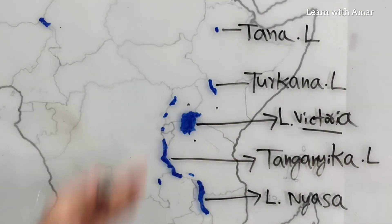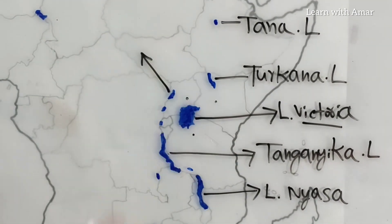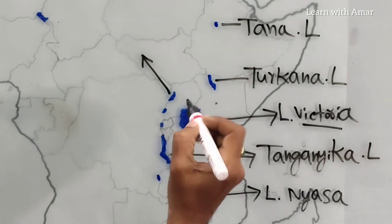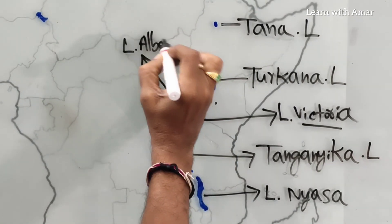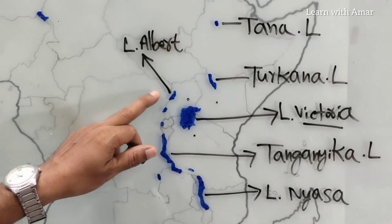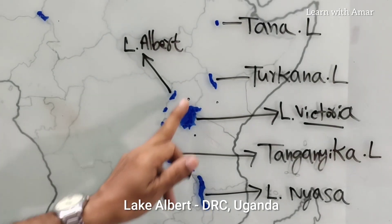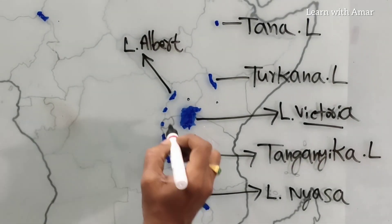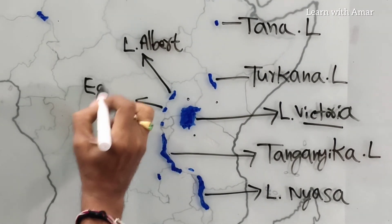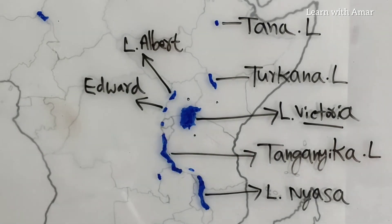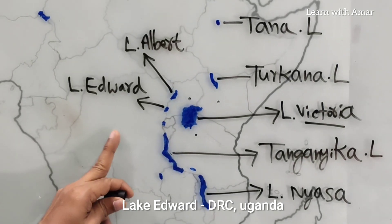These small lakes are there. This one is named after a person — a prince of some country. It is known as Lake Albert. Lake Albert is located between two countries: DRC, the Democratic Republic of Congo, and Uganda. This one is also named after a person — it is Lake Edward. Lake Edward also covers DRC and Uganda.